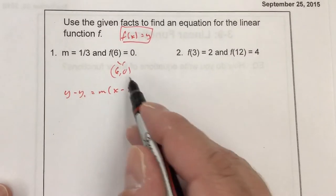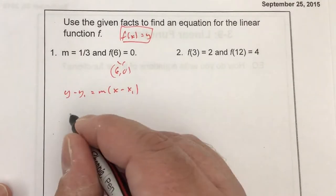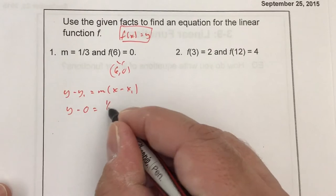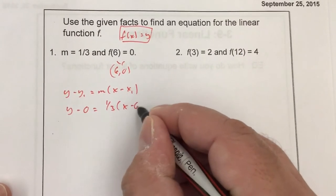So y1, x1 are the values from the point, and you plug in the slope. The y coordinate is 0, my slope is 1/3, and my x coordinate is 6.